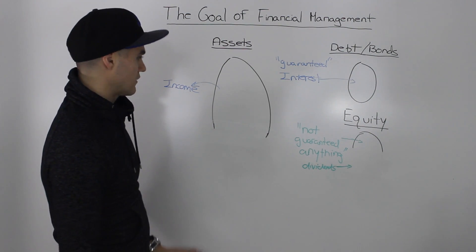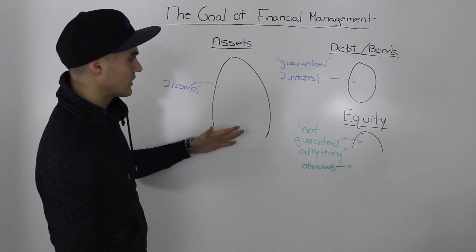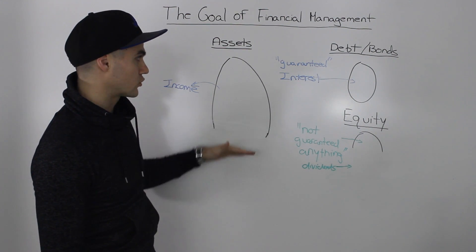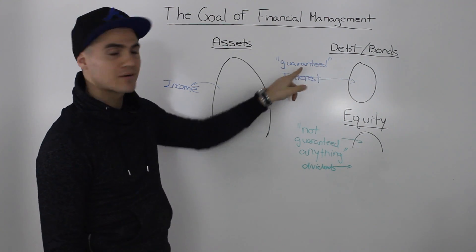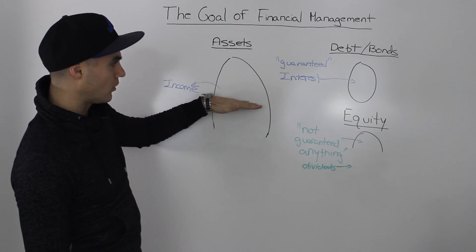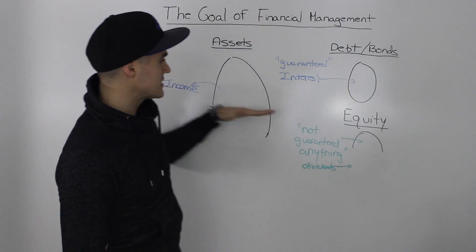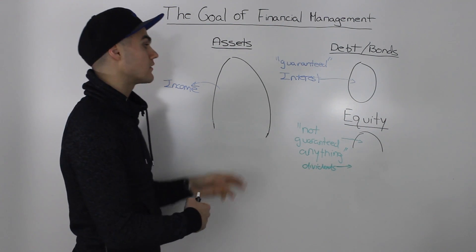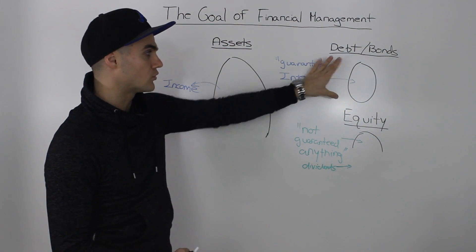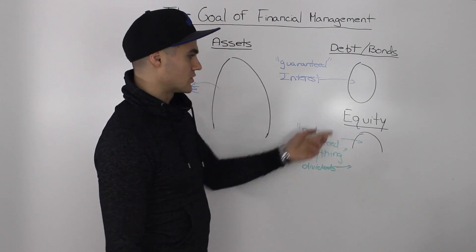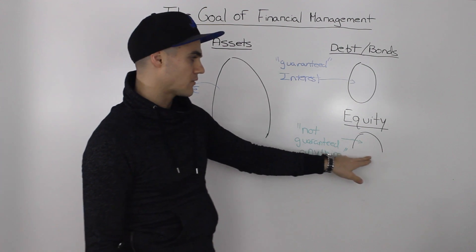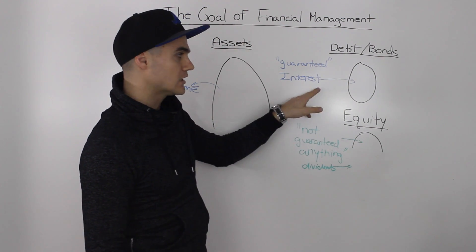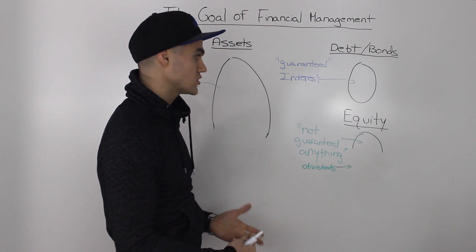Another observation you can take away from this fluctuation of assets — whether they are growing or shrinking — is that the bondholders' piece of the pie is always staying consistent, because the bondholders are guaranteed their return. However, if the assets shrink to a point where we have to start shrinking the bondholders' piece of the pie, that's when things hit the fan. A bankruptcy is filed, we have to liquidate the assets, and then pay off the bondholders with that liquidation value.